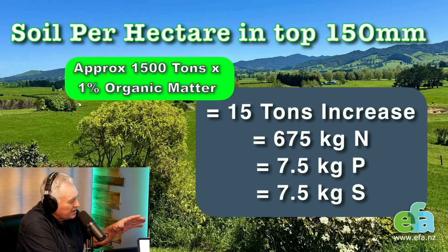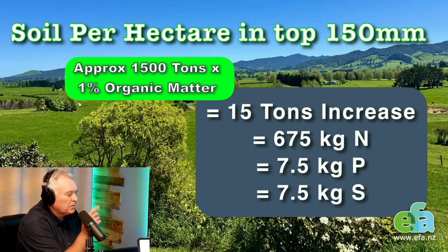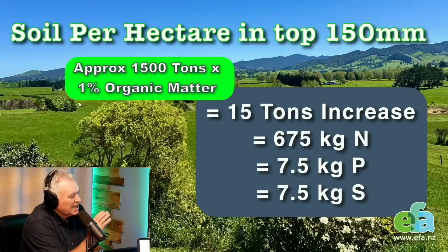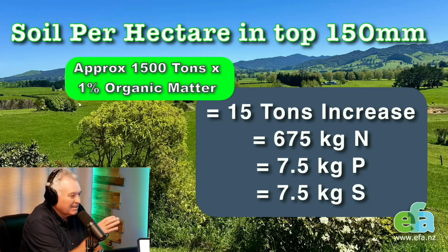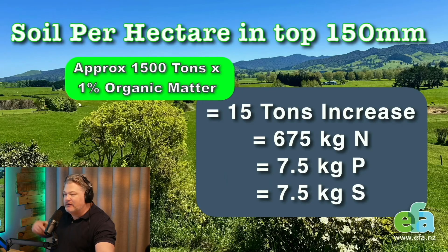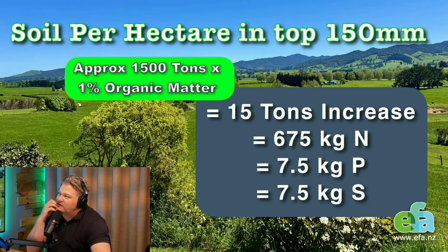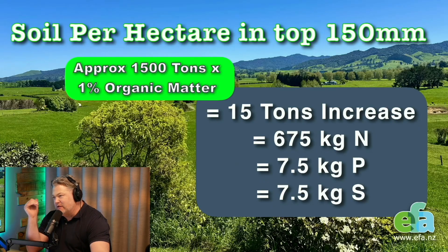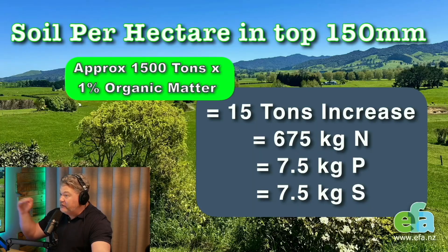So 7.5 kilograms of phosphorus — this is really important, because if you look at a dairy farmer doing 1,000 kilograms of milk solids, they take off the farm about 6 kilograms per 1,000 kilograms of milk solids per hectare. We've already got it covered. But it's expensive stuff if you're going to put that on. So how difficult or expensive is it to get just that 1% increase?